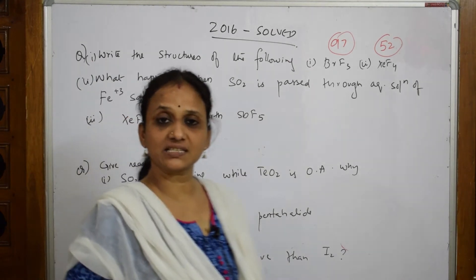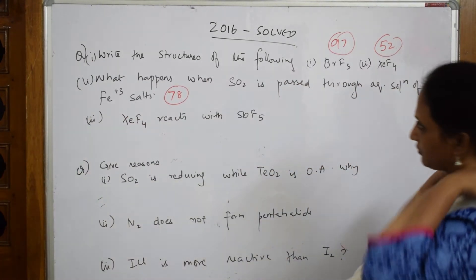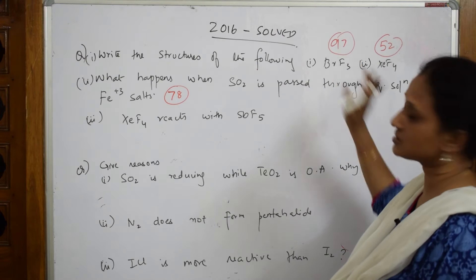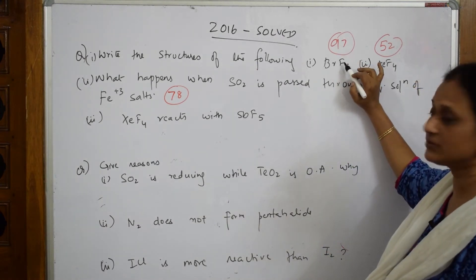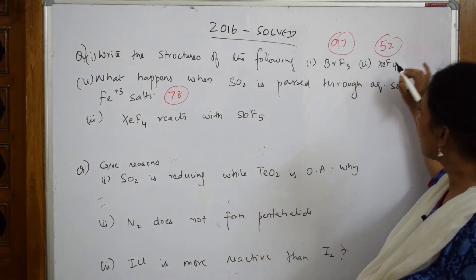Let us come back and solve your 2016 paper. In the 2016 paper, they've given the structures. Structures I've already done in video number 97 for the interhalogen compounds.